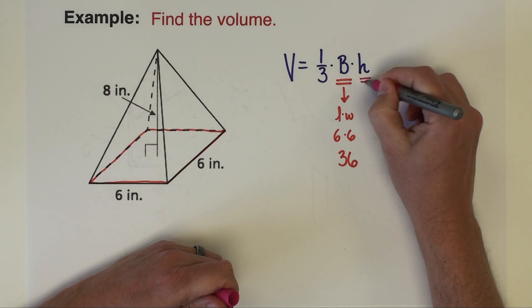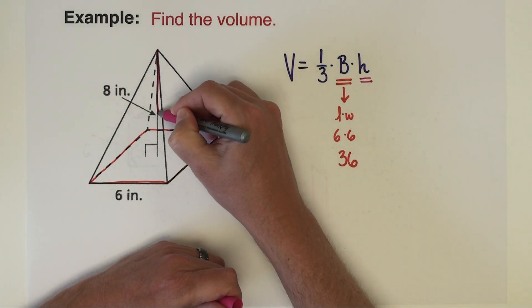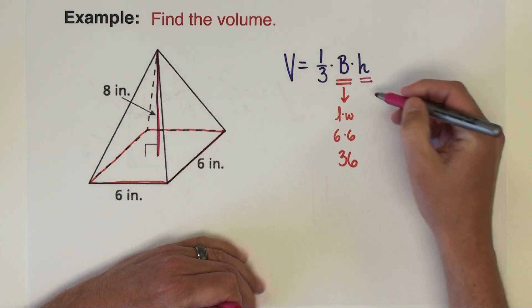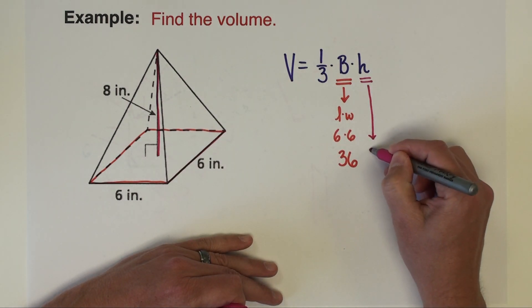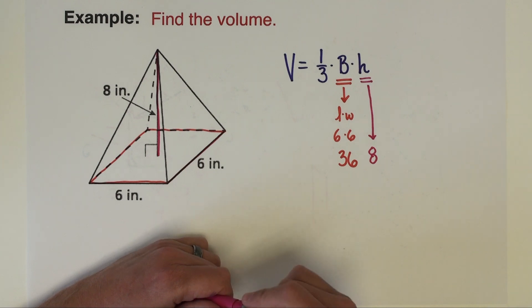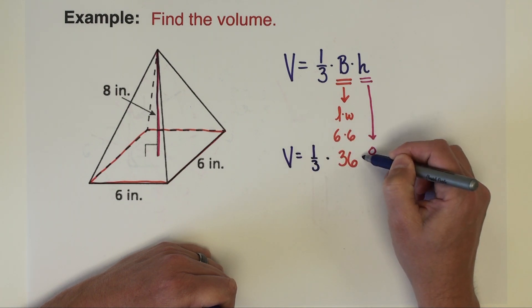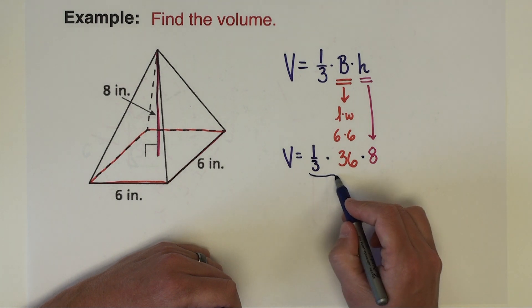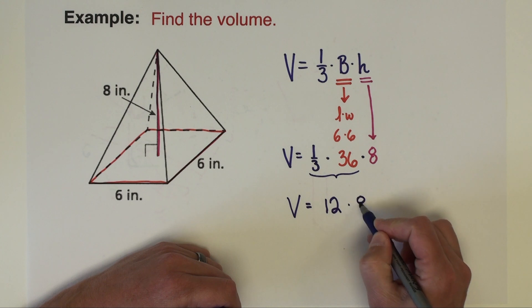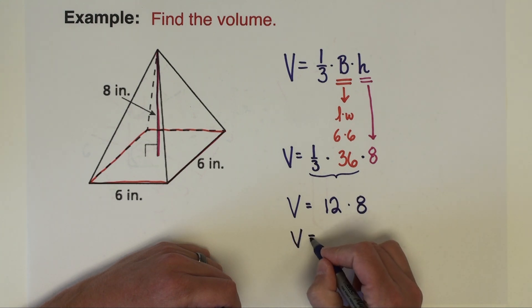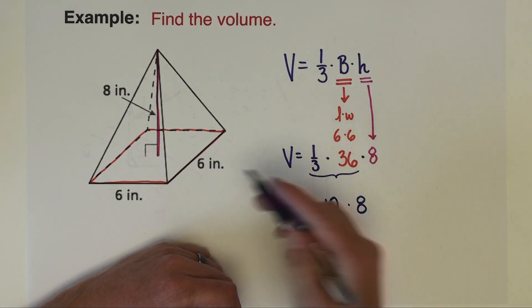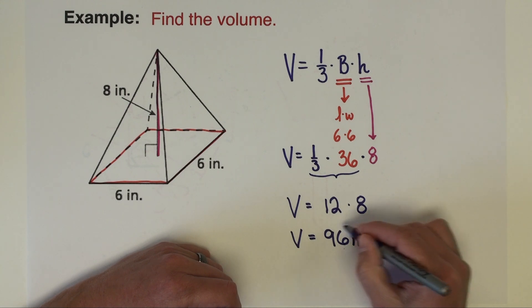The height of this pyramid is how tall the pyramid is from the top down to the base, and the height of this pyramid is 8. We have the two pieces we need. Our volume formula is going to be one-third times 36 times 8. One-third of 36 is 12, and then 12 times 8 is 96. The units to the answer, since the units are inches, are going to be inches cubed.